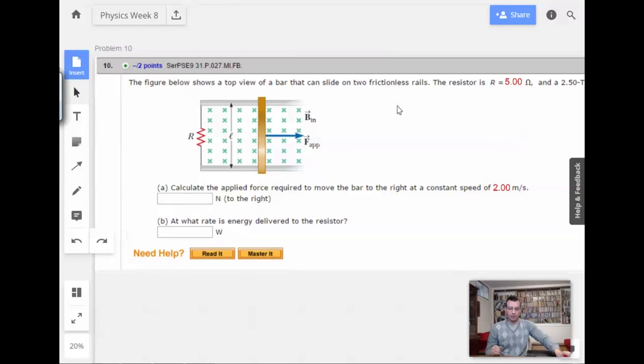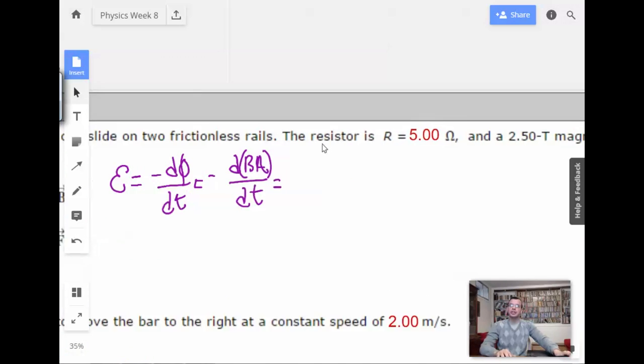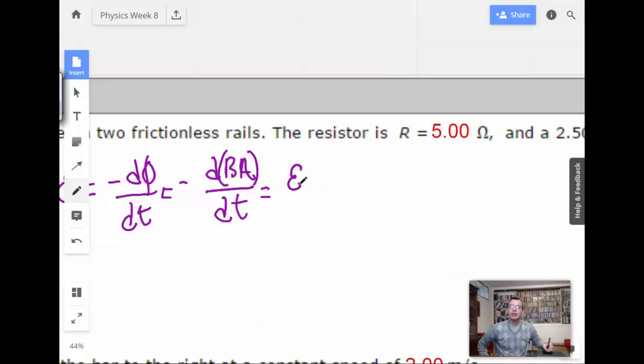So, I'm going to start this guy off with Lenz's Law. Ooh, magenta. Negative dΦ/dt equals negative dB·A/dt. And then we do the whole product rule. I'm going to draw this part nice so I can use it better. There we go. Outstanding.